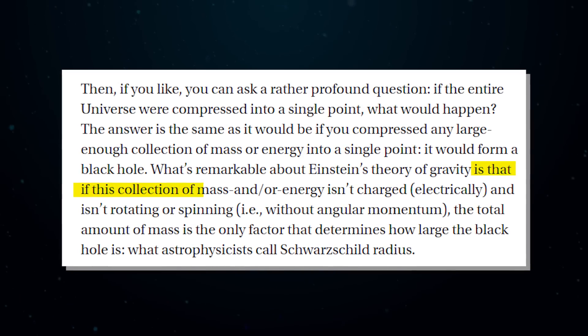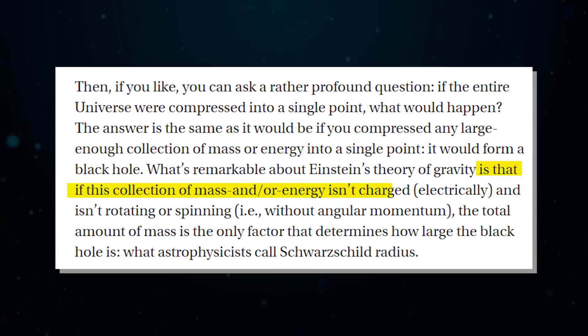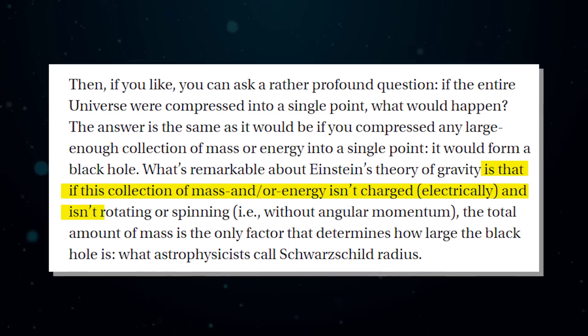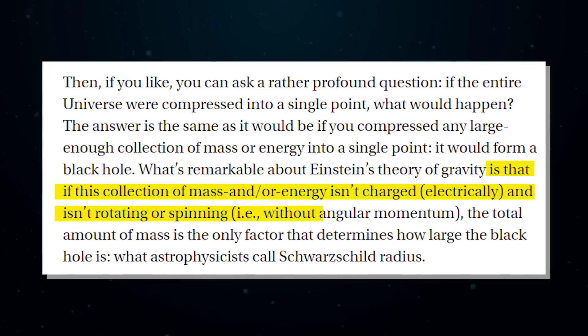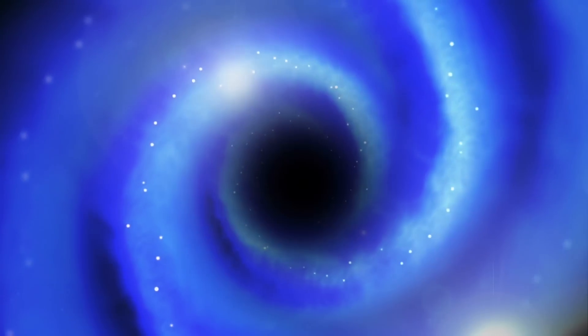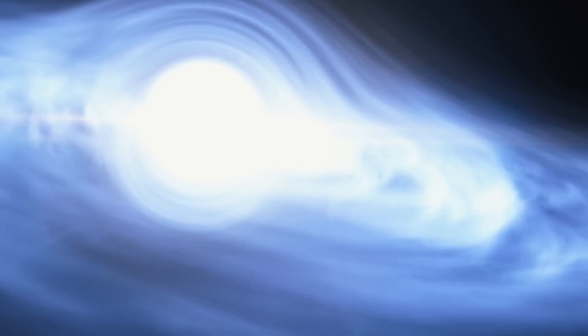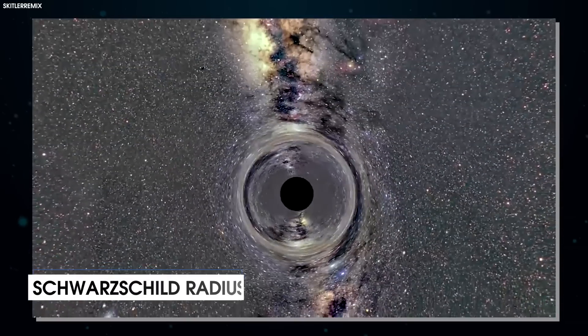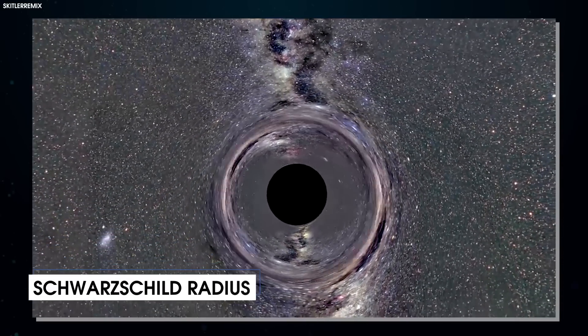What's remarkable about Einstein's theory of gravity is that if this collection of mass and or energy isn't charged electrically and isn't rotating or spinning without angular momentum, the total amount of mass is the only factor that determines how large the black hole is, what astrophysicists call a Schwarzschild radius.